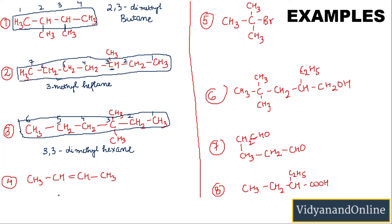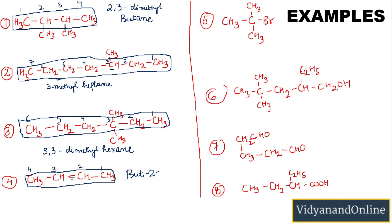Now the carbon compound has a double bond. If it is a double bond, there will be a change in the suffix. Numbering the chain: 1, 2, 3, 4. There is no branch, so there is no prefix. The root word is 'but' (4 carbons). The double bond is in the second position, so we write '2'. Because it is a double bond, the suffix is '-ene'. The name is but-2-ene.